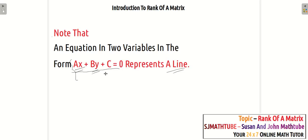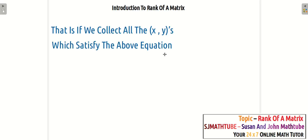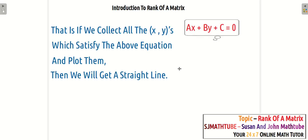You might have learned that an equation in the form AX plus BY plus C equal to 0 represents a line. Maybe some of you are still wondering how this will represent a line. Consider any equation in the form AX plus BY plus C equal to 0. What you do is collect all the X comma Y values which will balance this equation, and if you plot all those points, you are going to get a straight line.